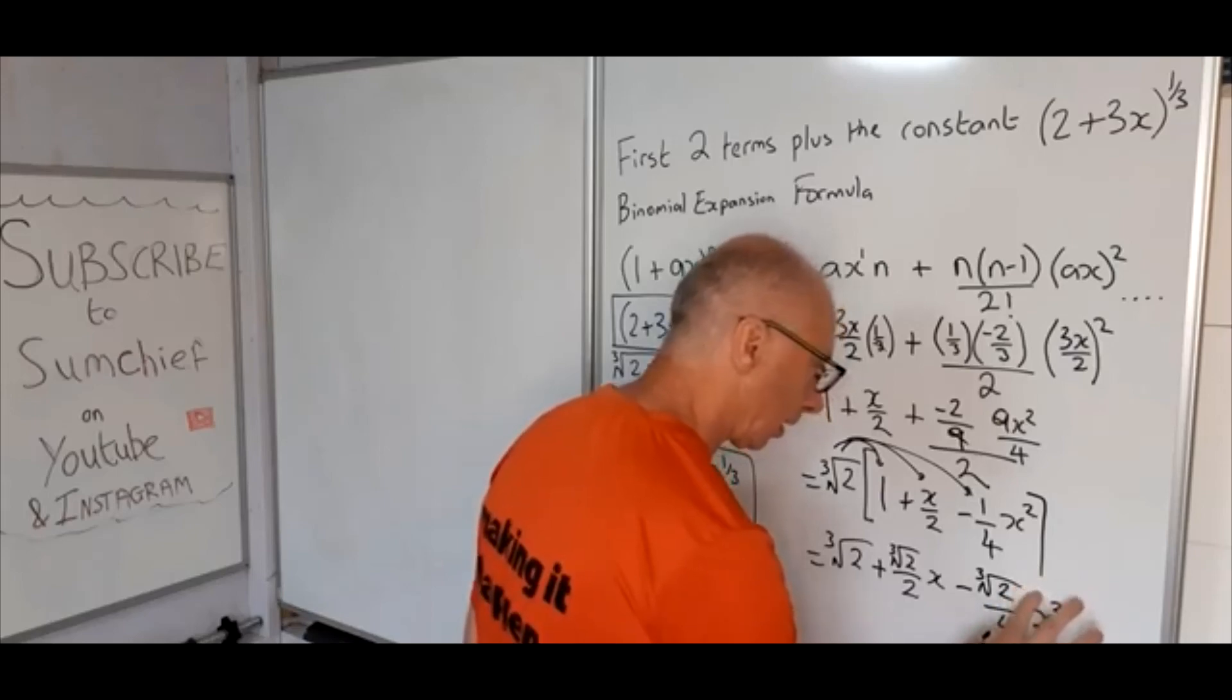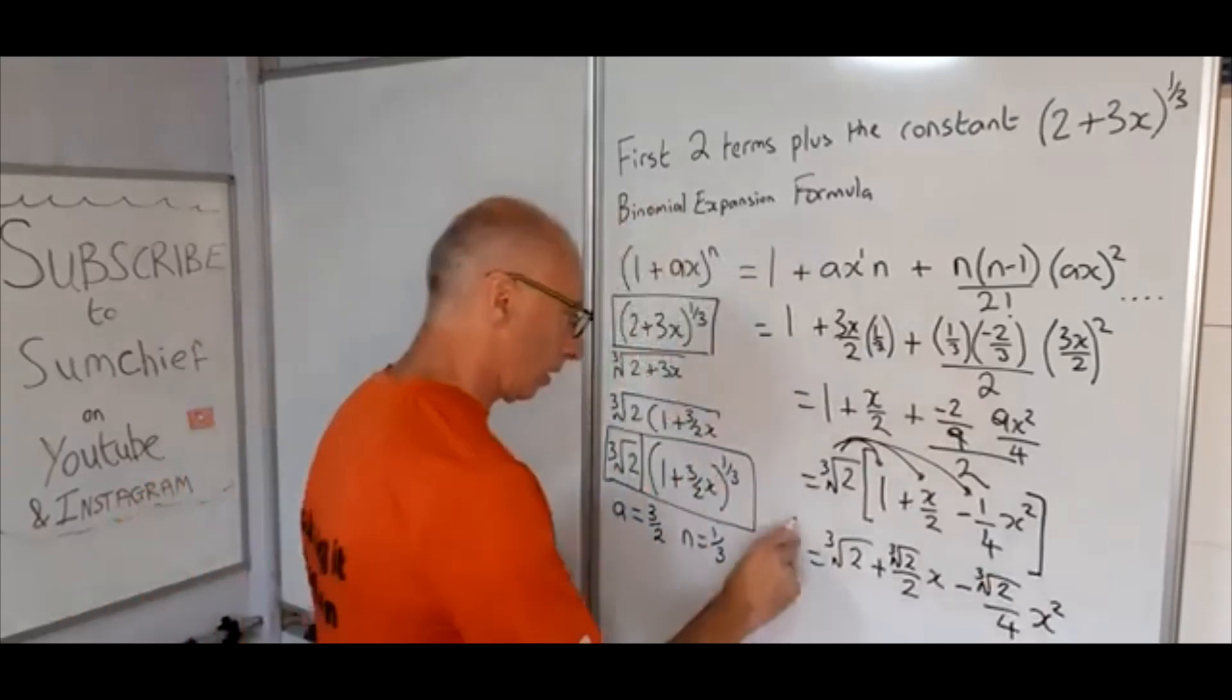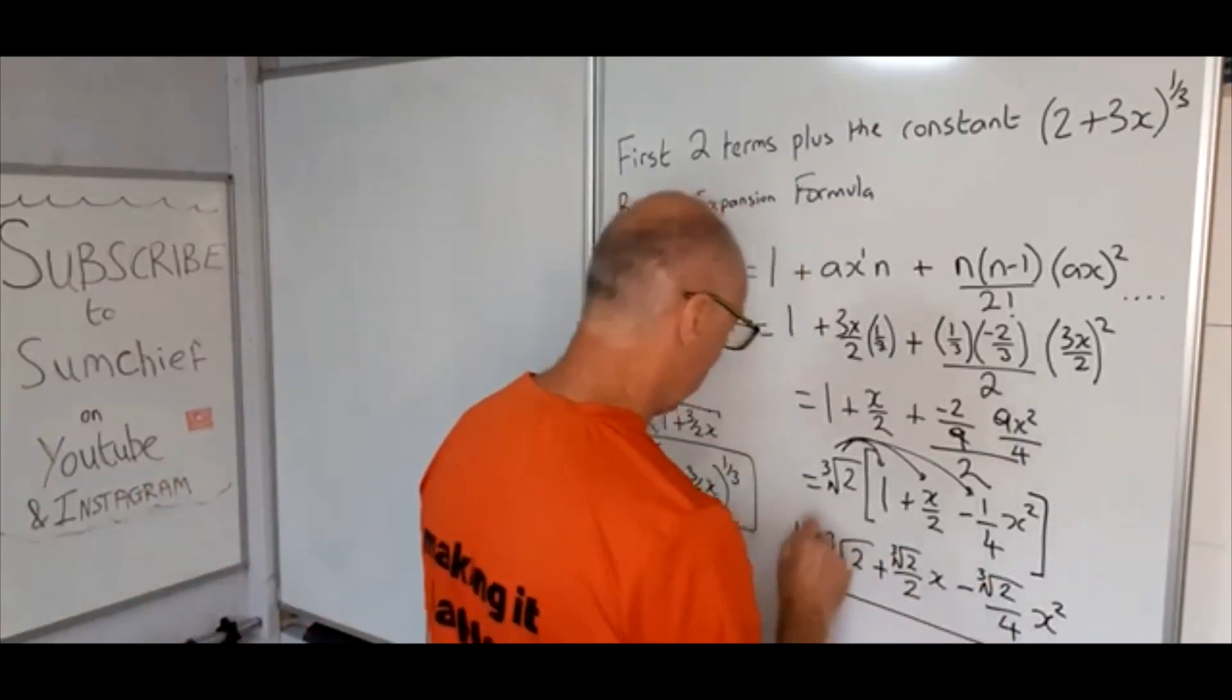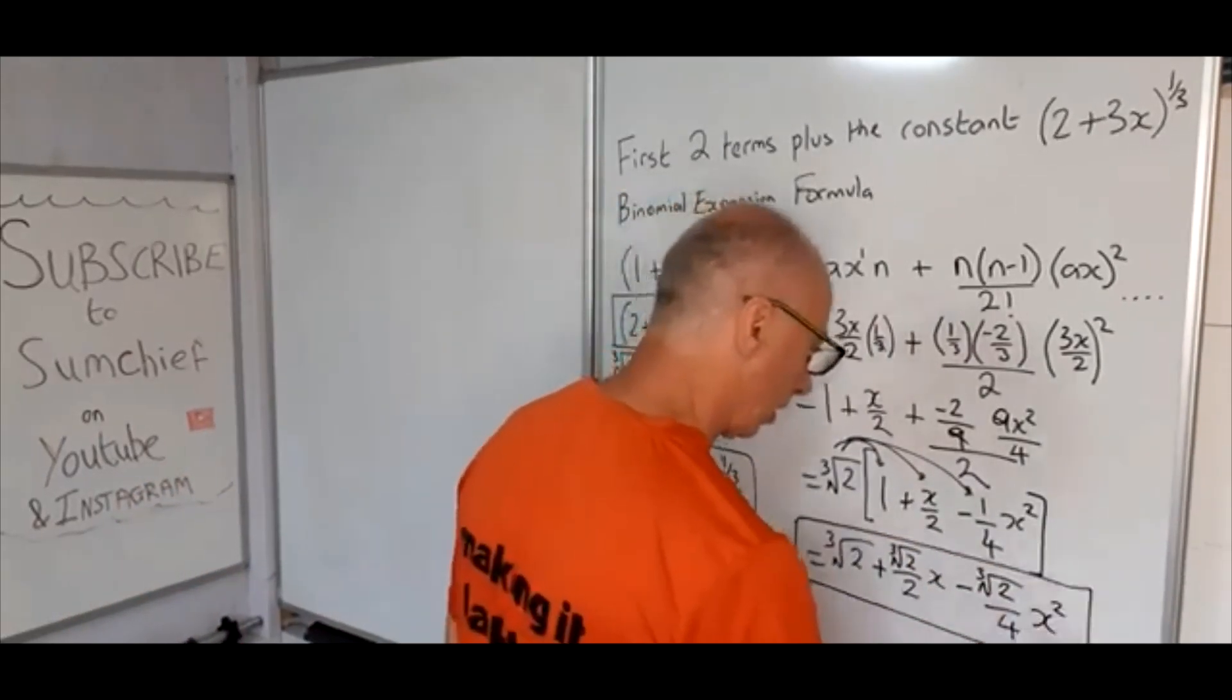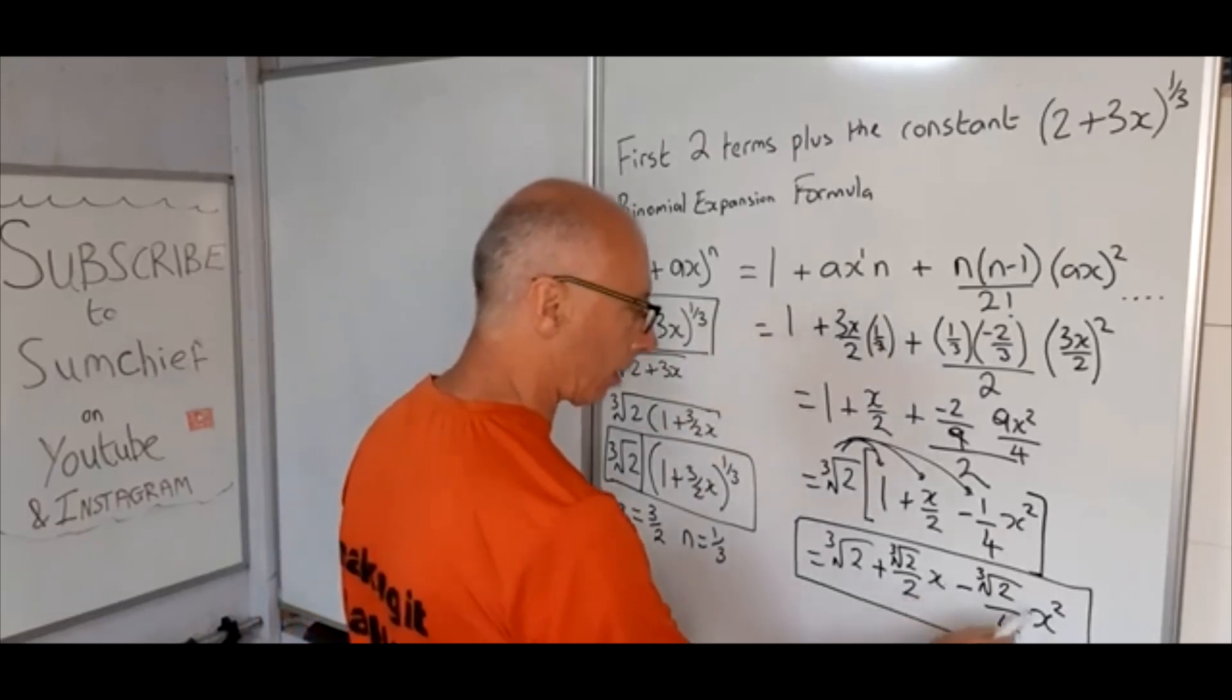That gives us our answer. So we've got the constant which is cube root of 2, and then the first two terms with x in, so we've got x and x^2.